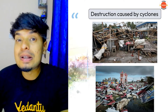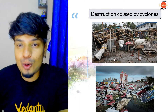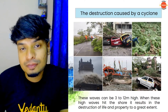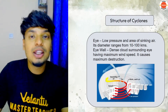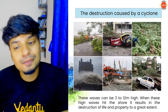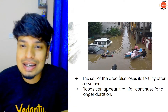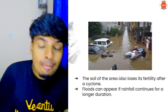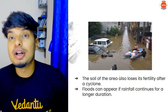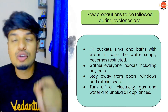The eye wall causes maximum destruction to life and property — everything is thrown away. Cyclones also create floods because the low pressure system causes the ocean to rise up. When these waves hit the shore, it results in massive destruction to life and property. If salt water enters the land, the land becomes less fertile and you can't grow plants there. Floods can appear if rainfall continues for a long duration.